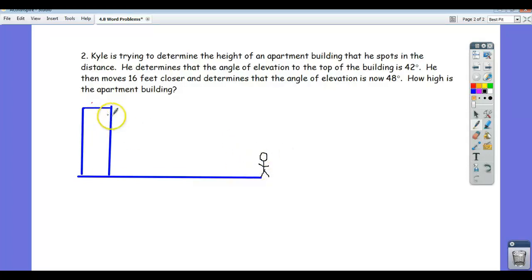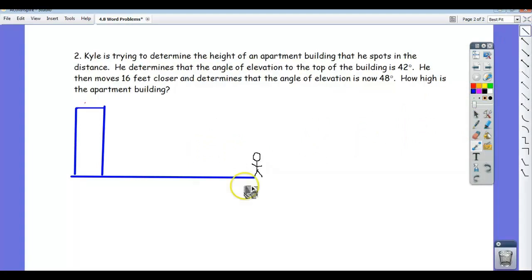And he spots his apartment building, he's trying to figure out the height of it. He determines the angle of elevation to the top of the building is 42 degrees. So let's recall what angle of elevation means. That means, and again think of like elevator to go up, it means from him to the top of the building.